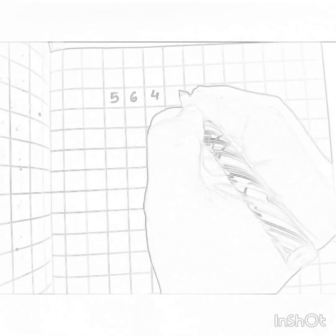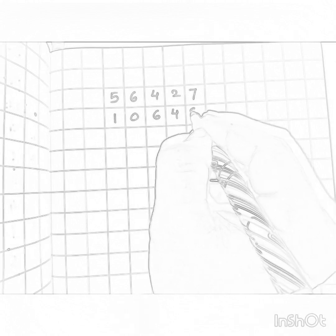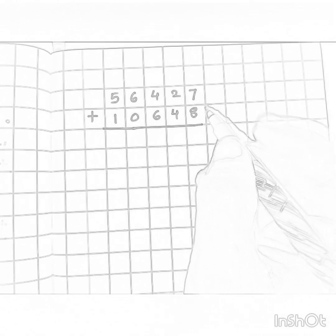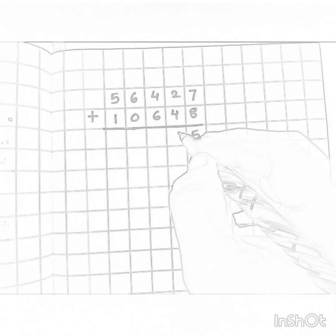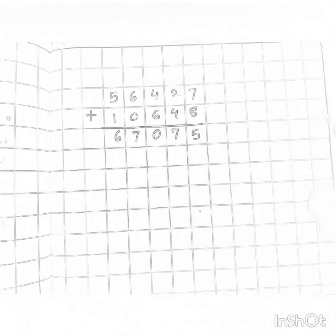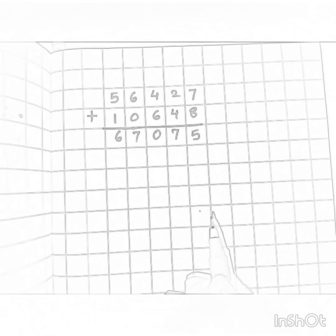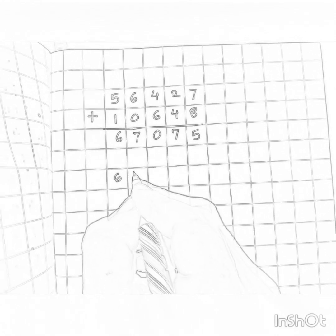Let us solve the next example: fifty six thousand four hundred and twenty seven plus ten thousand six hundred and forty eight. Look at the way I have written the order. Seven plus eight is fifteen, carry one forward. Four, two, six, and one is seven. Six plus four is ten. The answer is sixty seven thousand and seventy five.